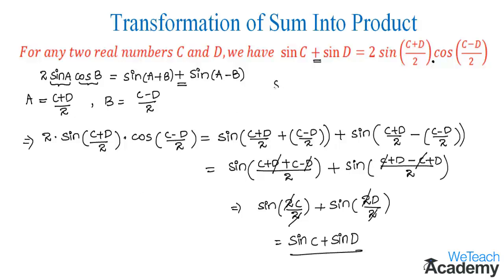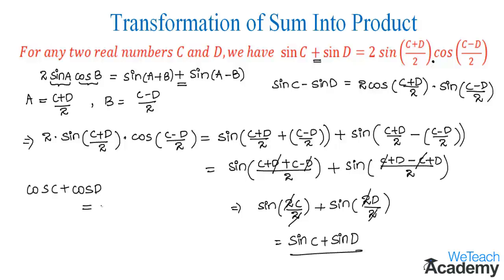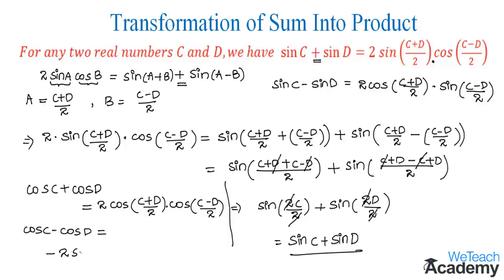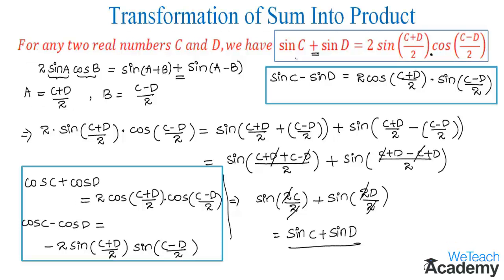Similarly, we can also prove the formula for sin c minus sin d, which equals 2·cos((c plus d)/2)·sin((c minus d)/2). We can also prove the formula for cos c plus cos d, which equals 2·cos((c plus d)/2)·cos((c minus d)/2). And cos c minus cos d equals minus 2·sin((c plus d)/2)·sin((c minus d)/2). Make a note of all these four formulas.